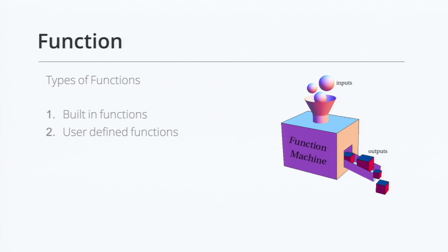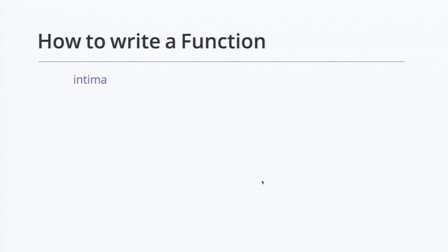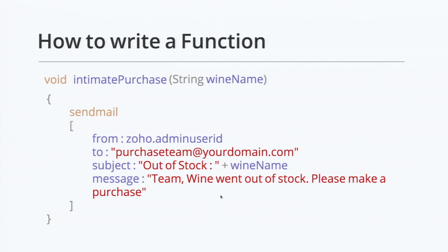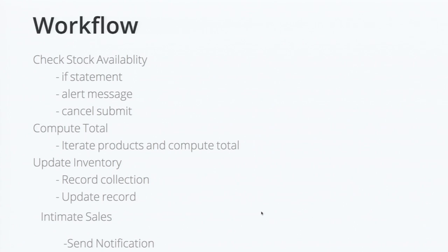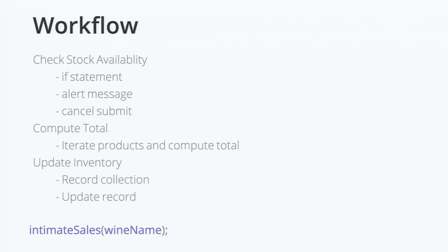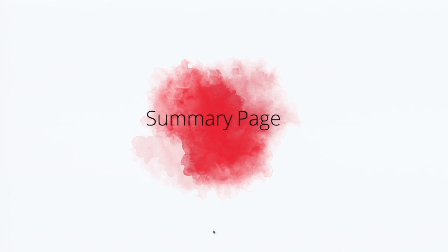User-defined functions are scripts written by ourselves. To write a function, first mention the function name, pass the input, mention the return type, and the block of code — what we have written for the intimate purchase. Now we have moved the intimate purchase into a separate function where you can directly call this function in the workflow. Getting back to the workflow, you can make use of the input value directly by calling the variable name. The intimate purchase has been moved to another function, which can be invoked by a function call, passing the wine name.